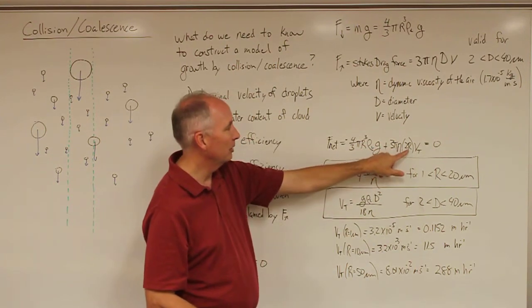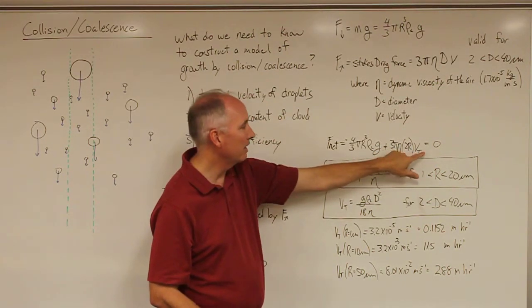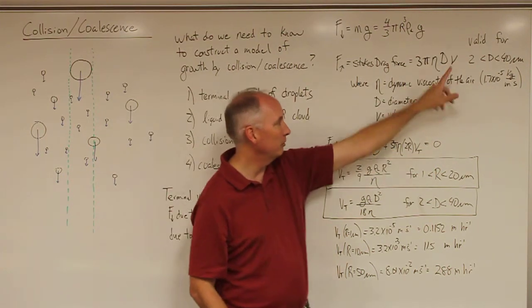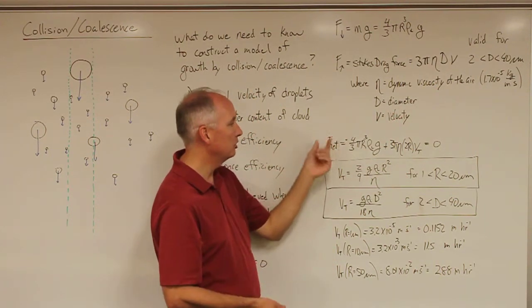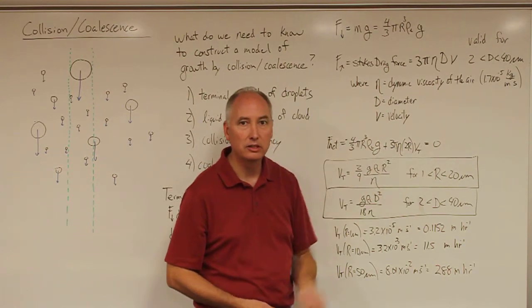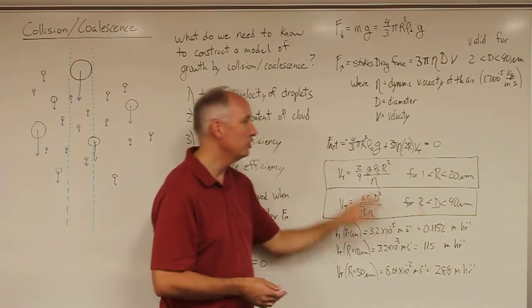Here I've replaced the diameter as twice the radius. Now I've replaced the v, which is the velocity, as the terminal velocity, because when you set this up to be equal to zero, by definition the velocity is the terminal fall speed of that object.